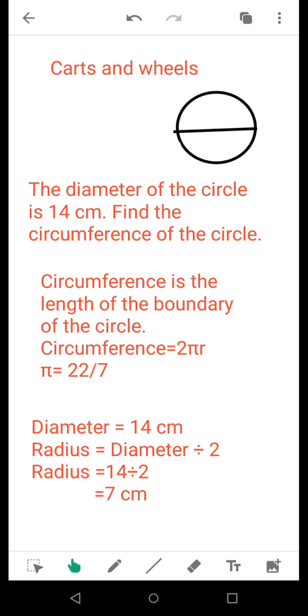We will be using that formula for finding the circumference of the given circle. For example, suppose the diameter of the circle is 14 centimeters. Find the circumference of the circle. To calculate the circumference, the diameter is not required—we require the radius.